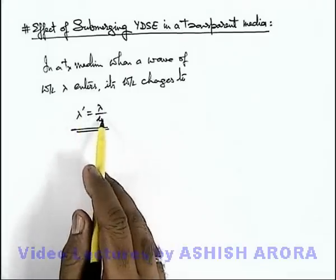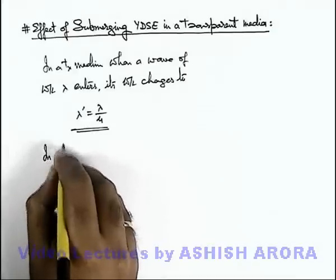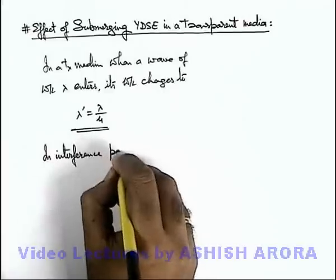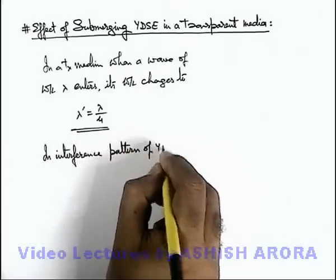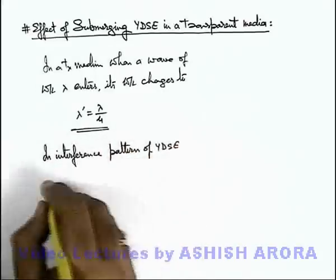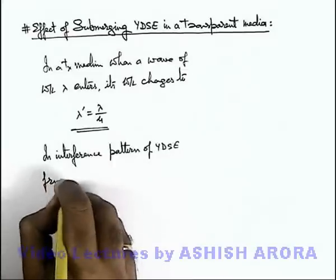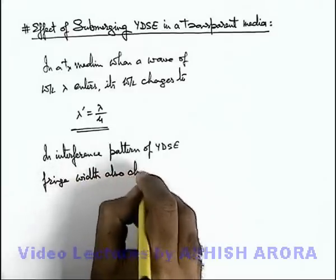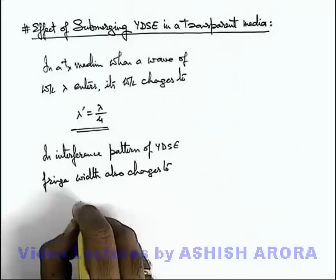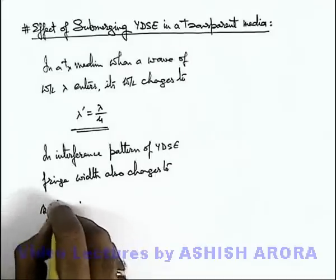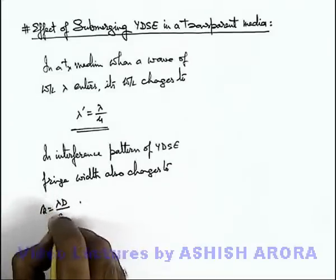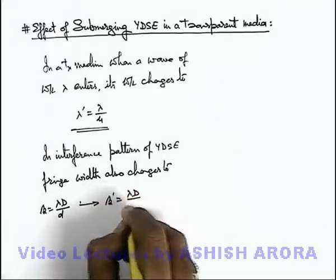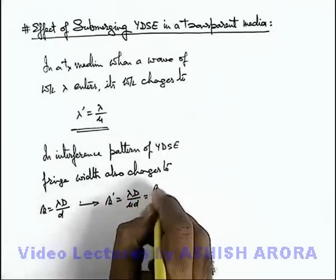As wavelength decreases, we can say that in the interference pattern of YDSE, if wavelength decreases, the fringe width also changes. If earlier fringe width was beta, given as lambda D by small d, now it will change to beta prime, which we can write as lambda D by mu d, or it can be written as beta by mu.